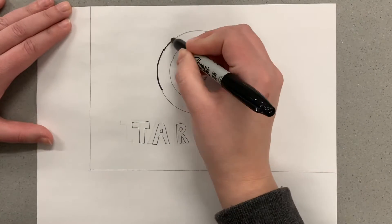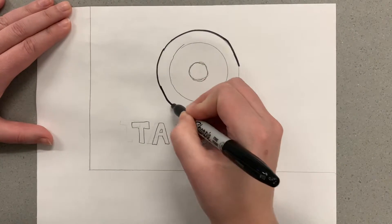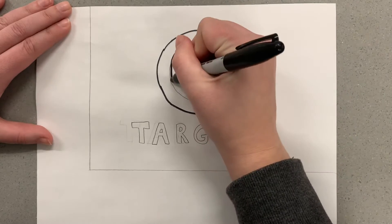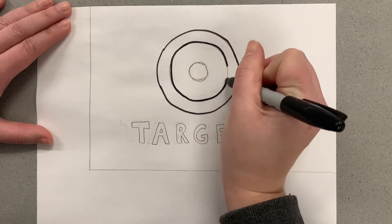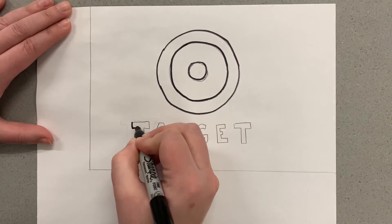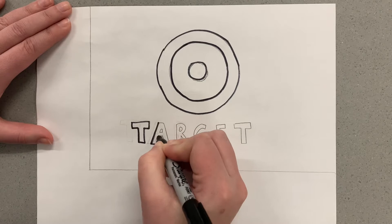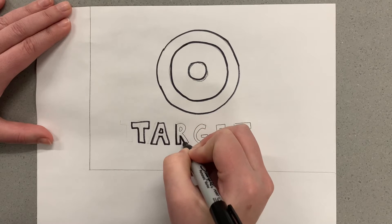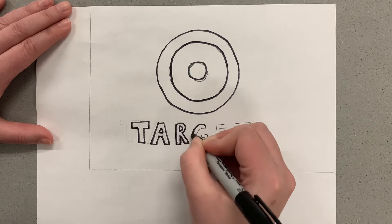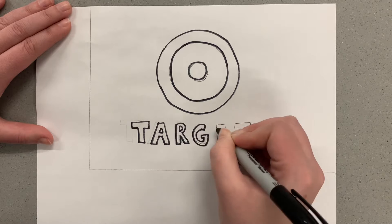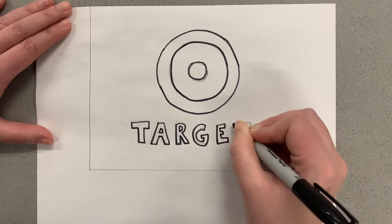For our printmaking project, you can see I already have my design sketched out on my paper. If you have something that needs to be reversed, you could draw it the correct way and then trace it with a sharpie like I'm doing, and then we'll just flip it over. It's a lot easier than trying to write it backwards, so feel free to do that if that makes things easier for you.